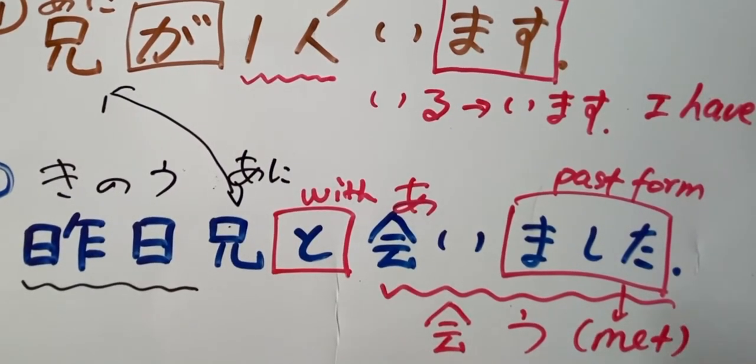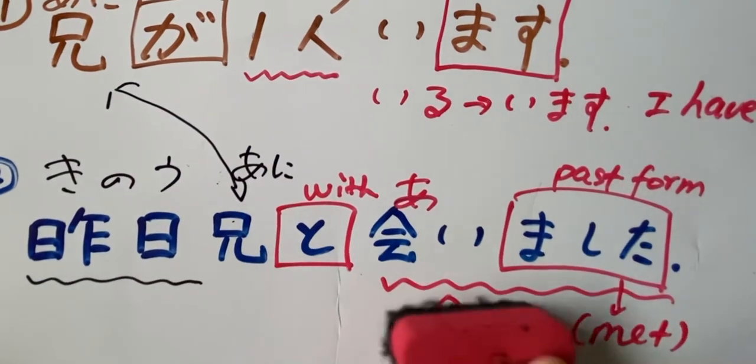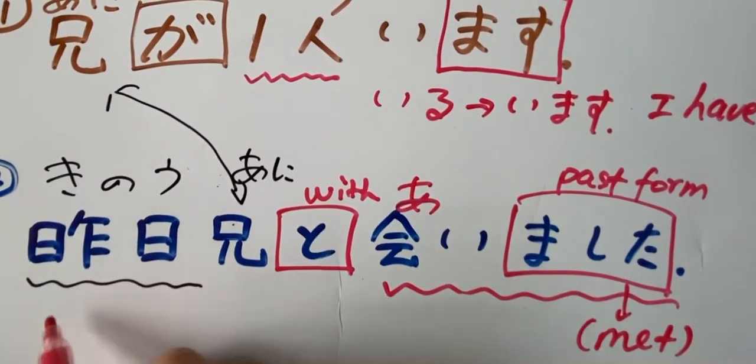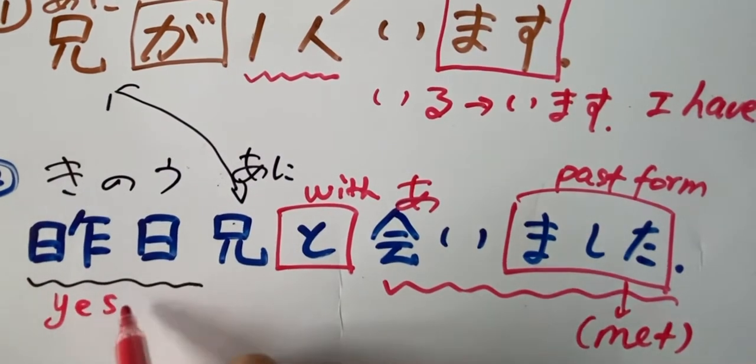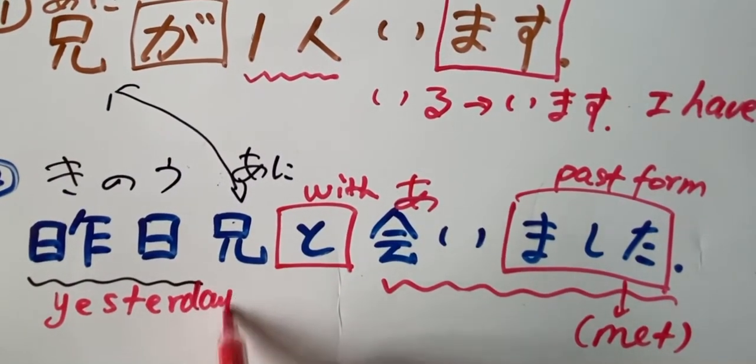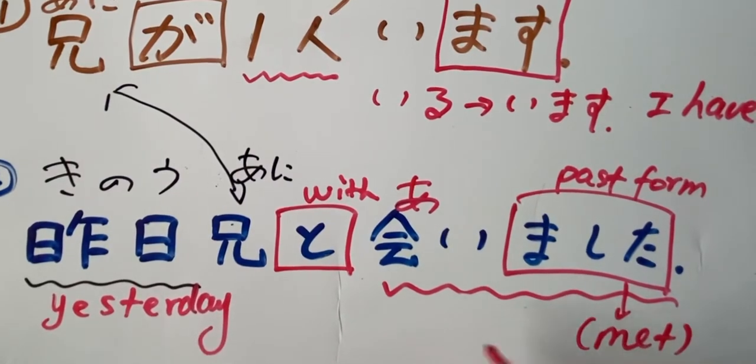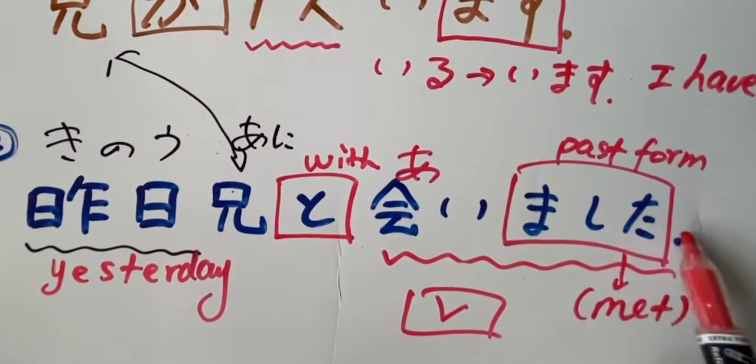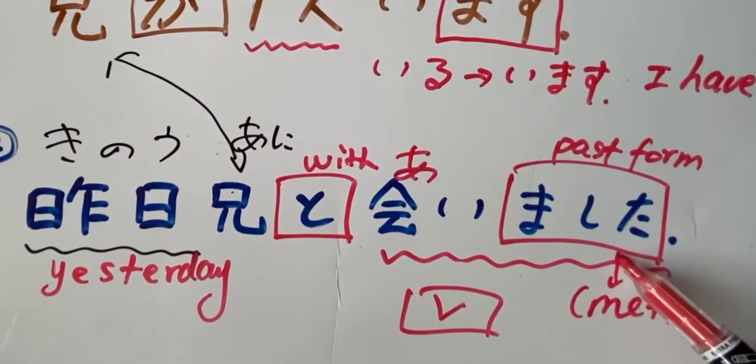Alright. Met. Yeah. So yesterday, ne. Yesterday, kino, yesterday. Remember the verb, the verb is always behind. Behind. At the end of the sentence. At the end of the sentence. The last verb. Ne. Over here.